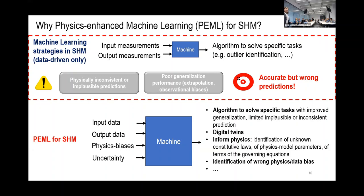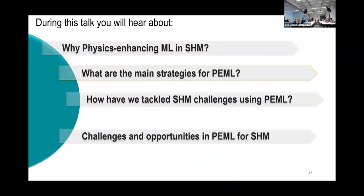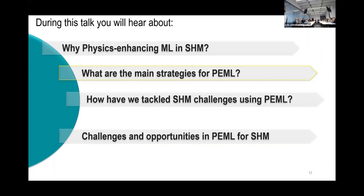It also helps identify wrong physics or data bias. The key change is that we don't have just input and output — we have physics biases, and we embed those uncertainties. This was the first part of the presentation answering why we need physics-enhanced machine learning for SHM. SHM stands for structural health monitoring — apologies for not clarifying that at the beginning.